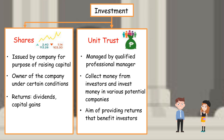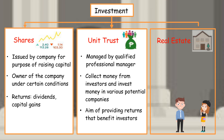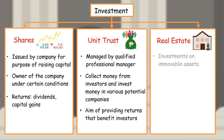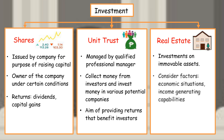Third, real estate. Investments on immovable assets, for example houses, shops, land and others. Factors to consider include economic situations, income generating capabilities (for example rent), location, and property prospects in the future. Investors receive returns in the form of rental income and capital gains.